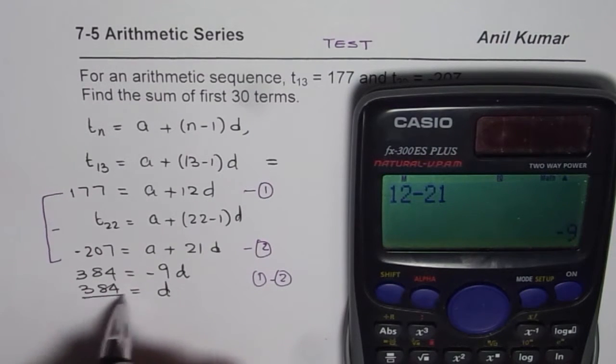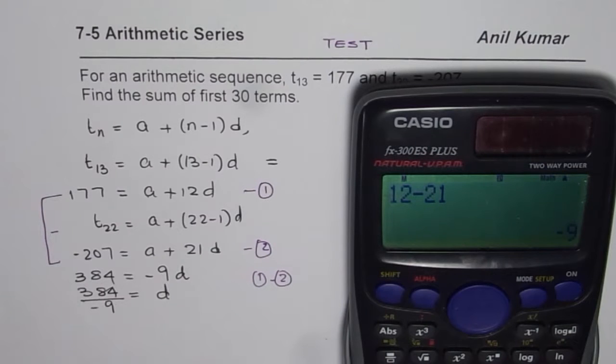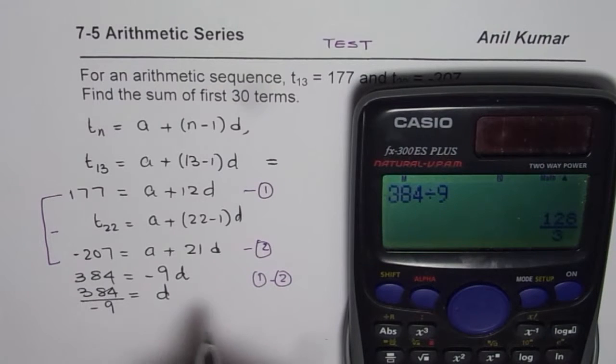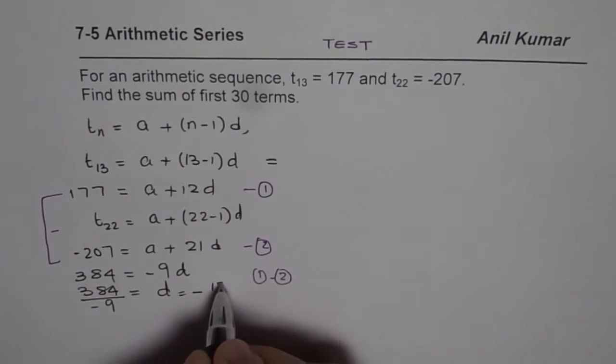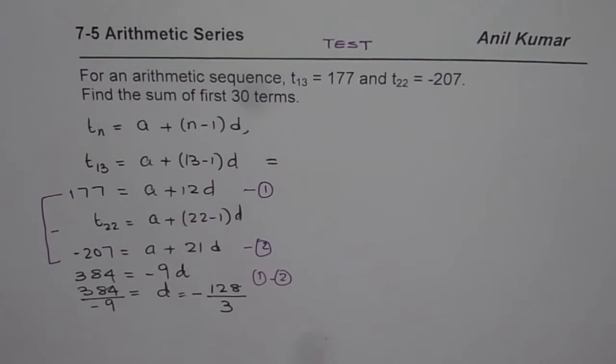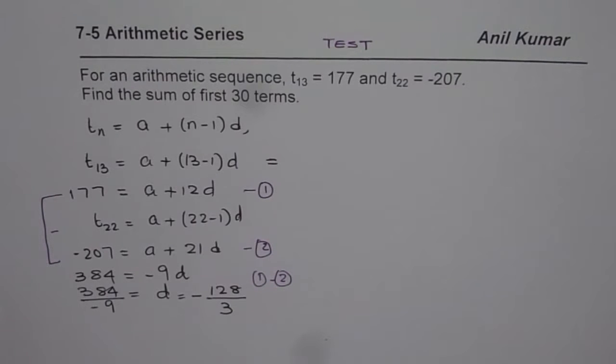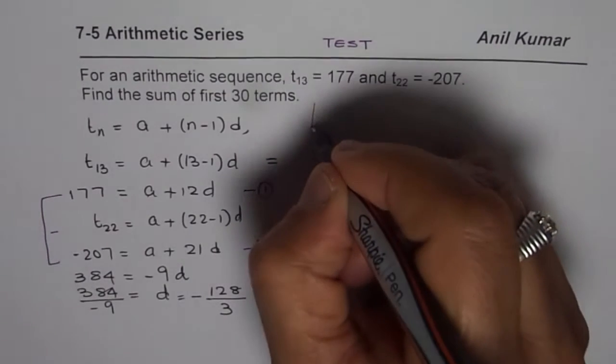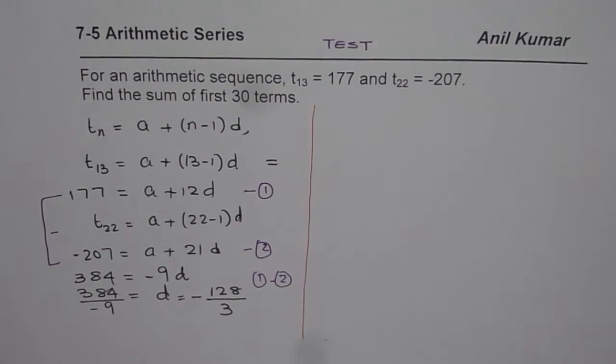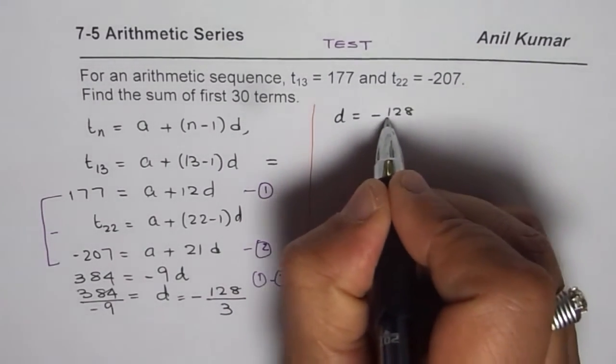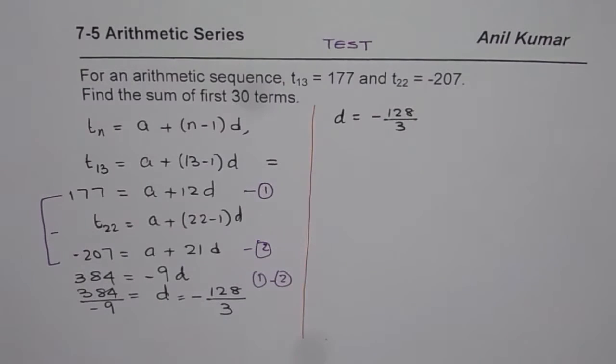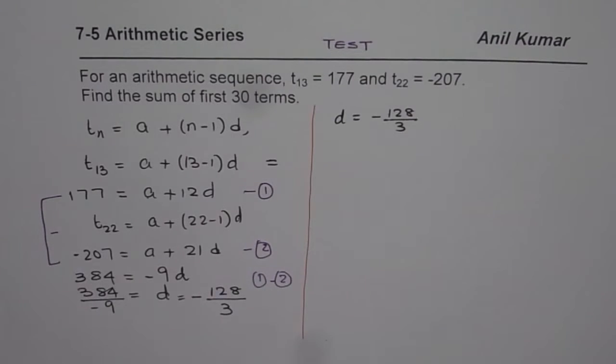From here you can find d: d = 384 / (-9) = -128/3. So first we find one of the parameters, and this time we found d = -128/3. Keep it as a fraction - dividing by 3 gives recurring decimals. Never put it in decimals, that's my advice.